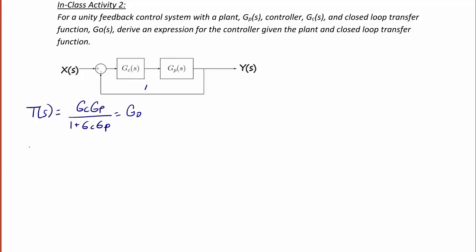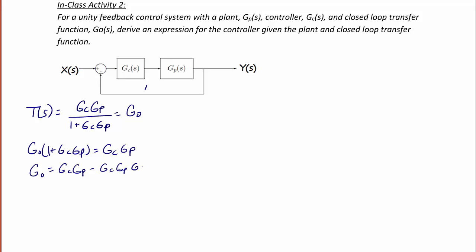Our goal is to solve for Gc. So we're going to have G0 times (1 plus GcGp) equals GcGp. Now I'm going to move all the terms that include Gc to the right side of the equation. So G0 is equal to GcGp minus GcGp·G0.